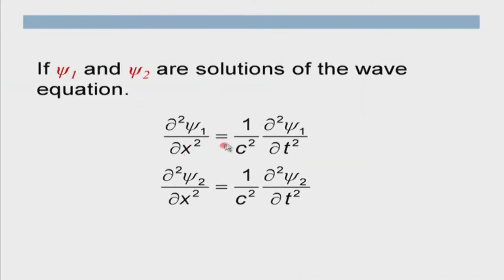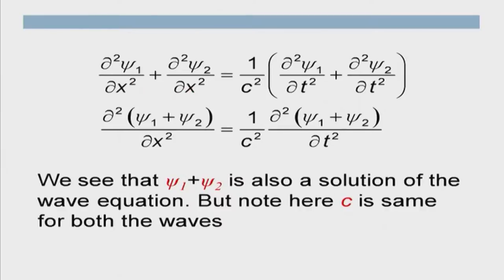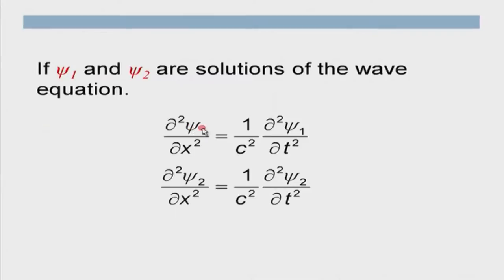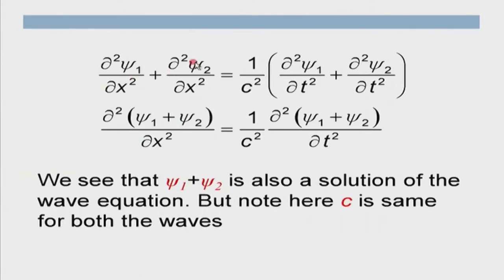psi 1 satisfies the wave equation: d²psi1/dx² = (1/c²) d²psi1/dt². psi 2 also satisfies: d²psi2/dx² = (1/c²) d²psi2/dt². I add these two equations and, because the derivative of a sum is the sum of derivatives, I can write d²(psi1+psi2)/dx² = (1/c²) d²(psi1+psi2)/dt². So psi 1 plus psi 2 is also a solution of this equation.